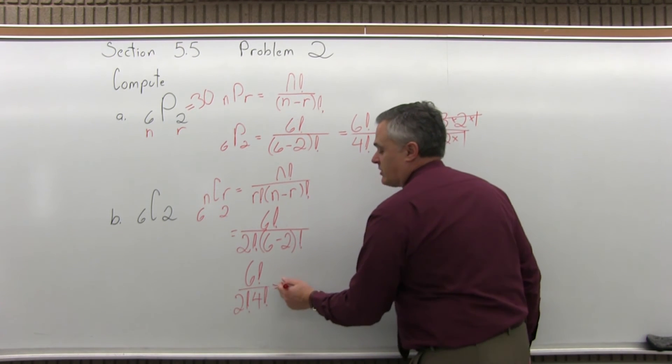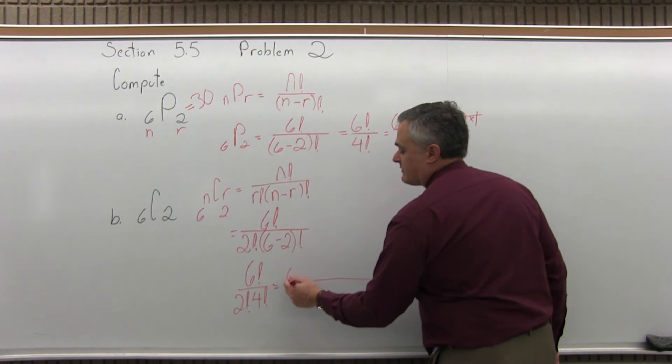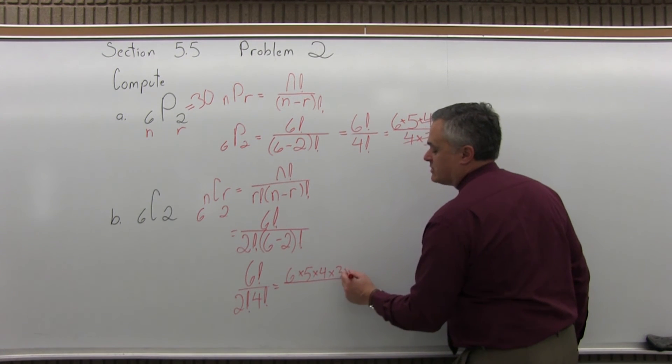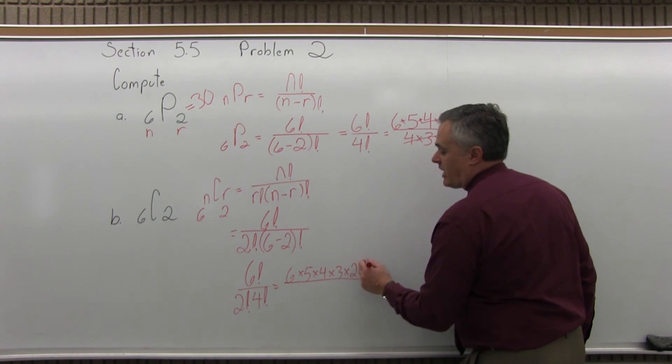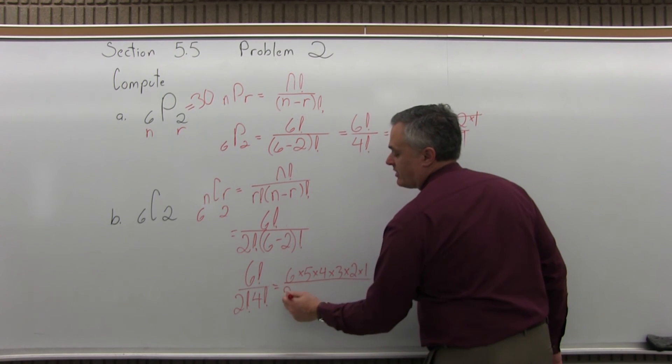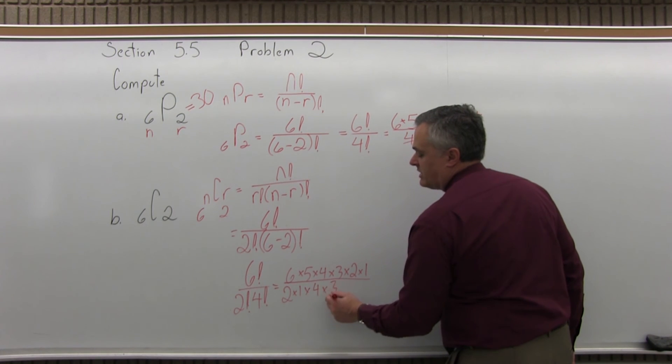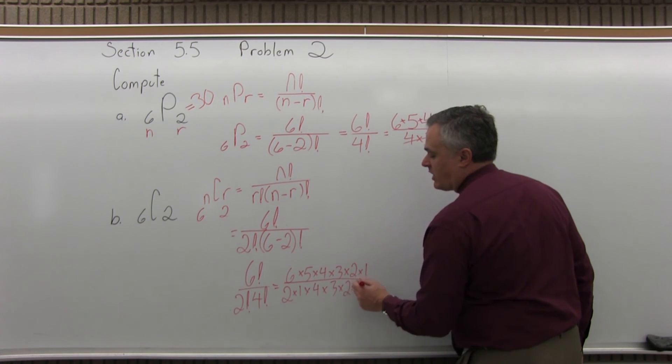So, now, the numerator, 6 factorial, is 6 times 5 times 4 times 3 times 2 times 1. And underneath, 2 factorial is 2 times 1, 4 factorial is 4 times 3 times 2 times 1.